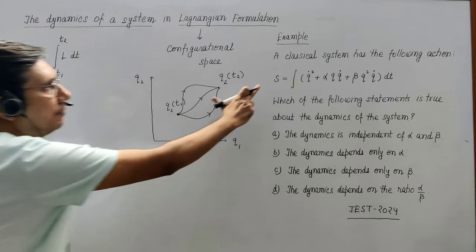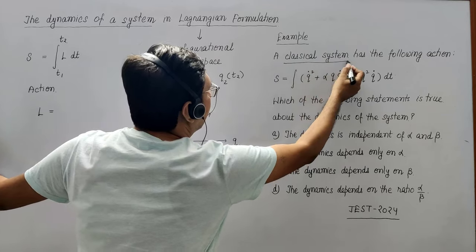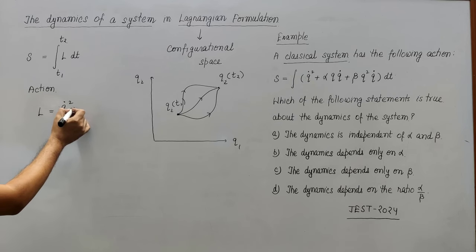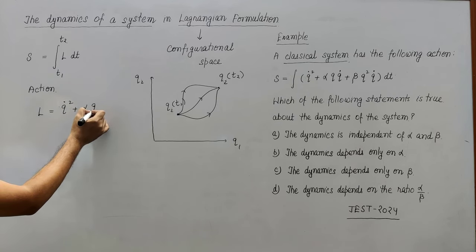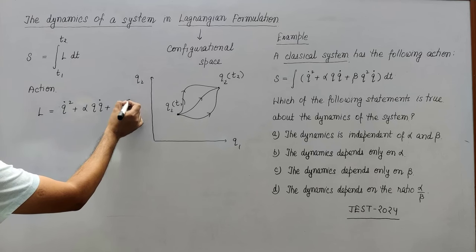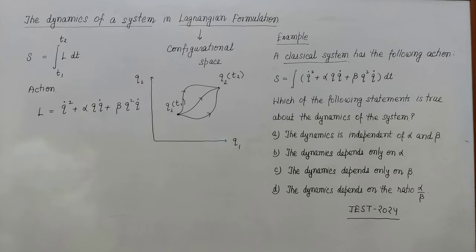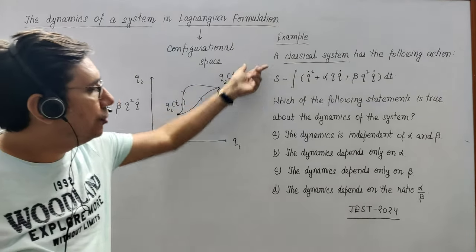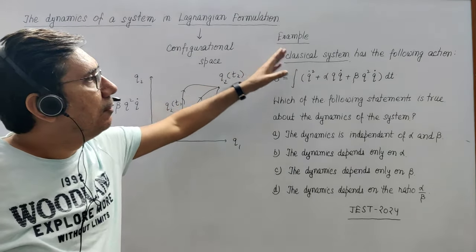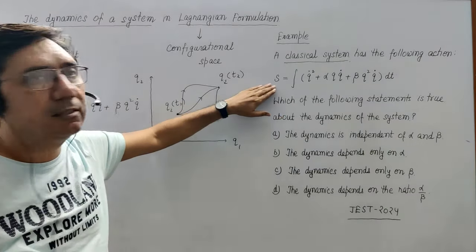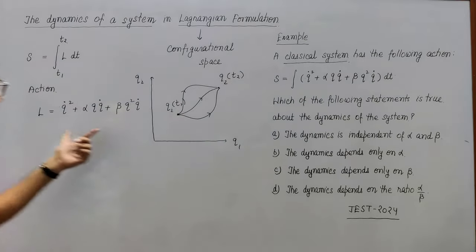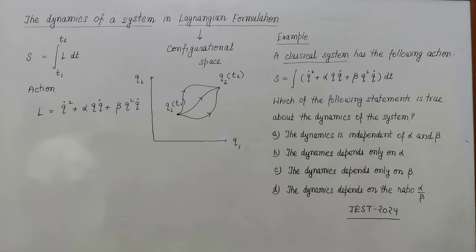So what will be the Lagrangian for this classical system? That will be: L = q̇² + αqq̇ + βq²q̇². In this JEST 2024 question, the classical system has a given action S = ∫L dt, so L will be this expression. This is the Lagrangian. Now that the Lagrangian is known to us, how can we find out the time evolution or dynamics of the system?